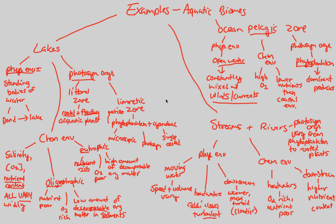That concludes our study of biomes and aquatic ecology. Through this, we've gained a greater appreciation for the complexity involved — we've zoomed out from population ecology all the way to community, environmental, ecosystem, and now these large, expansive biomes, with many things interacting in this study of ecology.